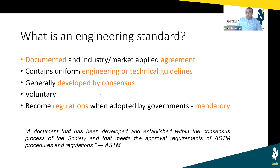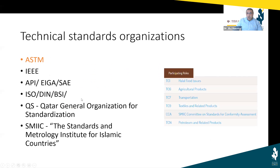Since we're talking about ASTM, ASTM defines a standard in its own way. They qualify a document that has been developed and established within the consensus process of the society — ASTM — that meets the technical approval of ASTM procedures and regulations as constituting a standard. There are many technical standards organizations out there — ASTM is just one of them. There is IEEE, APIs, IGA, SAE. ISO, DIN, and BSI are more international organizations. DIN represents the German standards, BSI the British standards.